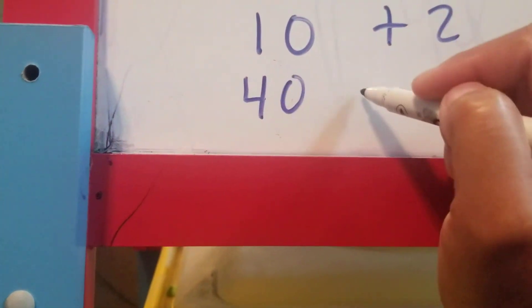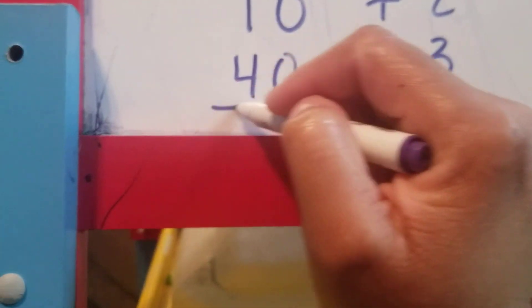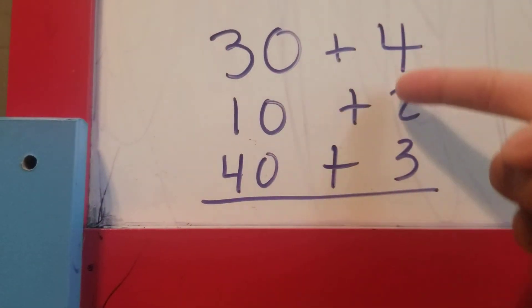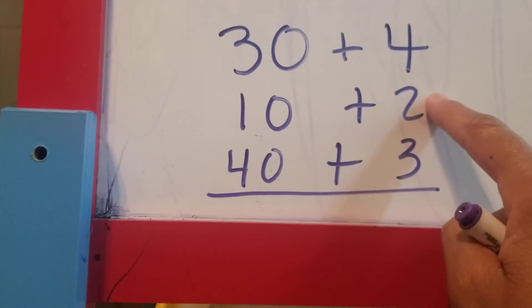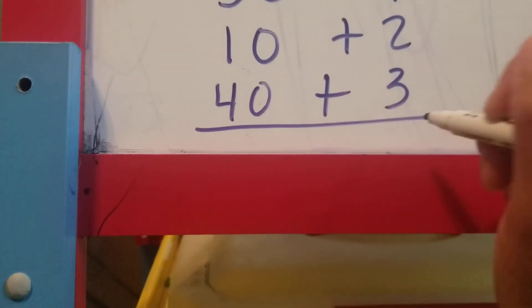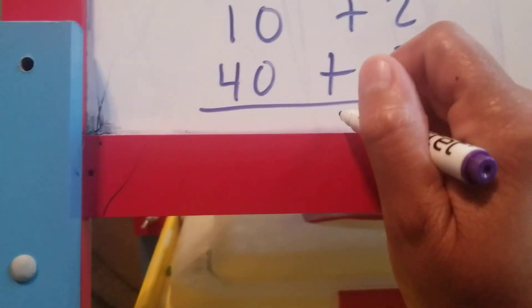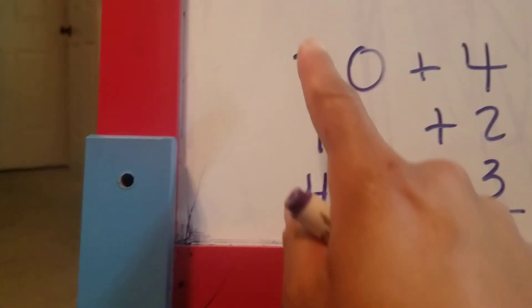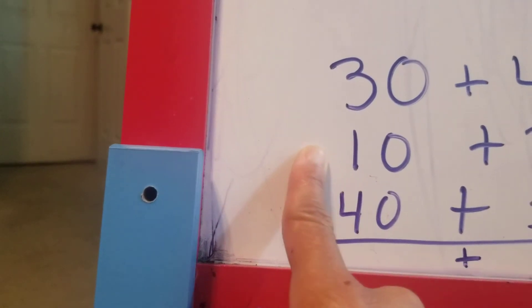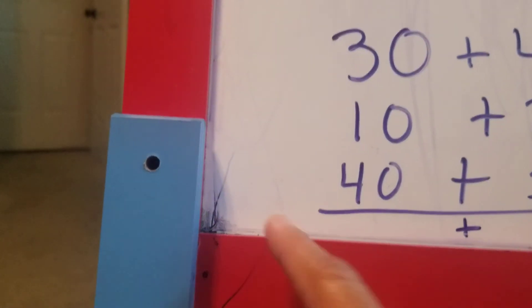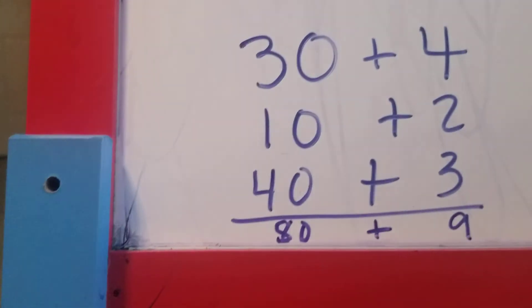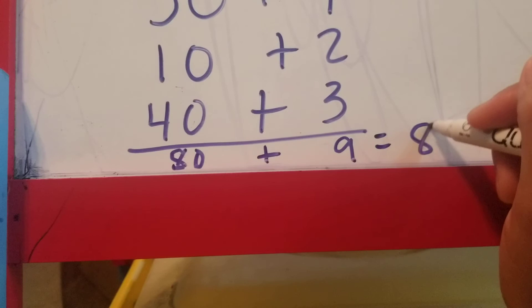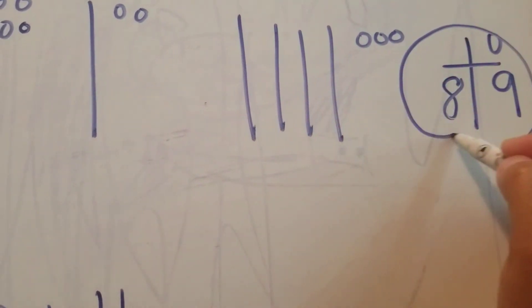All I need to do is add all my ones together. I know that 4 plus 2 is 6, and 6 plus 3 more is 9. I know that 30 plus 10 more is 40, and 40 plus 40 more is going to be 80. So 80 plus 9 equals 89. I've gotten 89 three times.